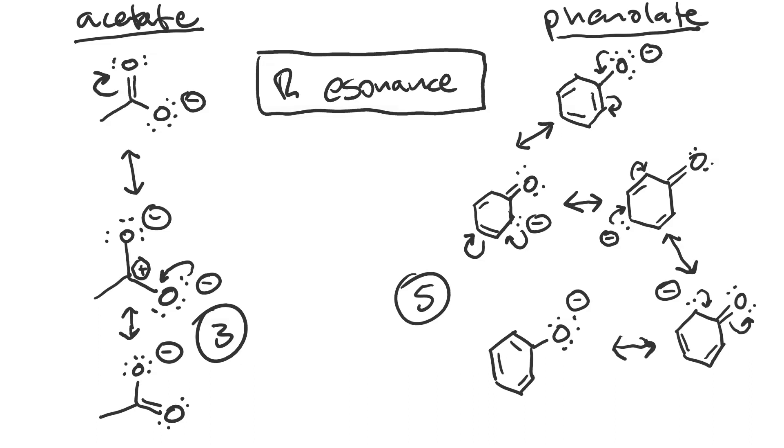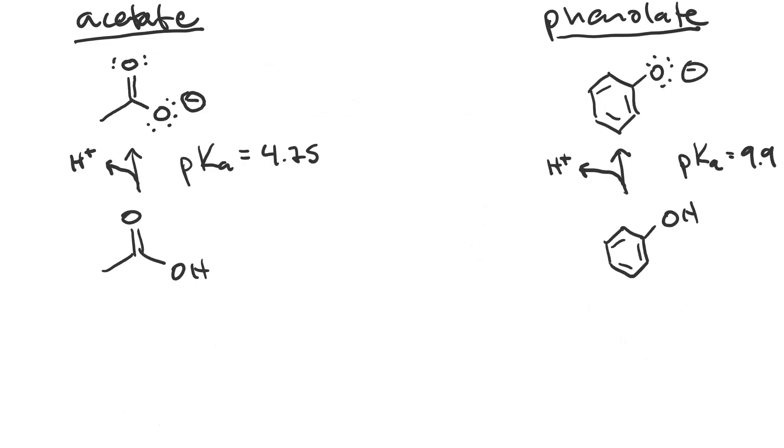And since resonance is a more important rule than induction, we might stop here. However, if we look at the actual pKa's of the two acids, acetic acid has a pKa of 4.75, and phenol has a pKa of 9.9. Hence, acetic acid is actually a stronger acid.